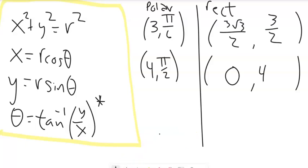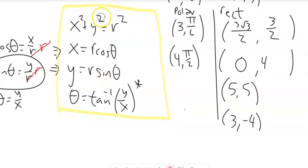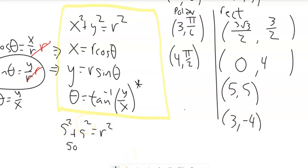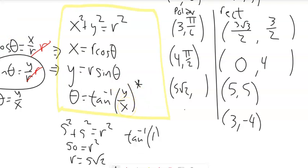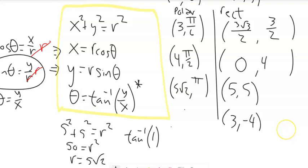What about going the other way? If I have the rectangular point (5, 5), using x² + y² = r²: 5² + 5² = 25 + 25 = 50 = r², so r = 5√2. Then theta = arctan(5/5) = arctan(1) = π/4. So the polar coordinates are (5√2, π/4).